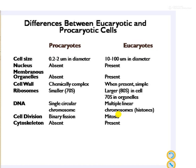In prokaryotes, single circular chromosomes are present, whereas in eukaryotes, double helical chromosomes are present. Cell division occurs by binary fission in prokaryotes, whereas in eukaryotes cells divide by mitosis. The cytoskeleton is absent in prokaryotes but present in eukaryotes.